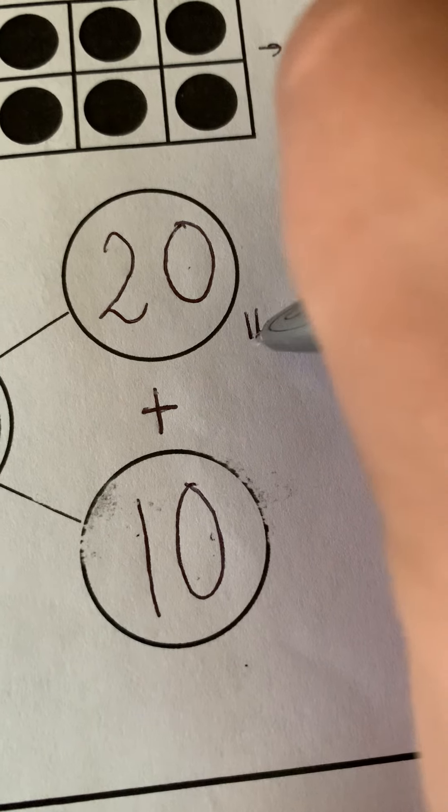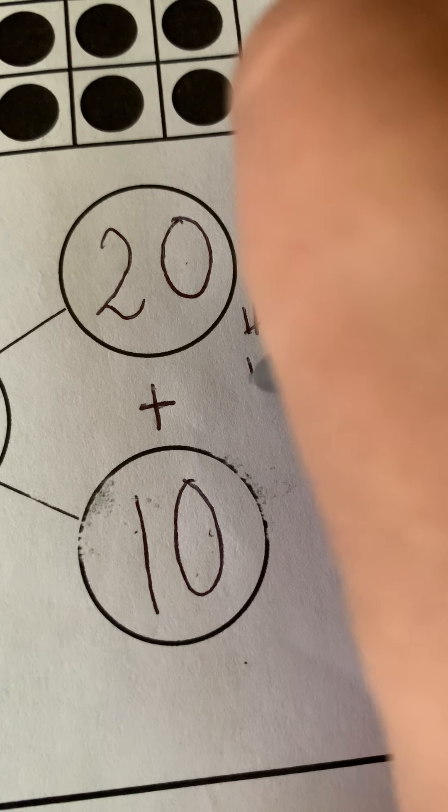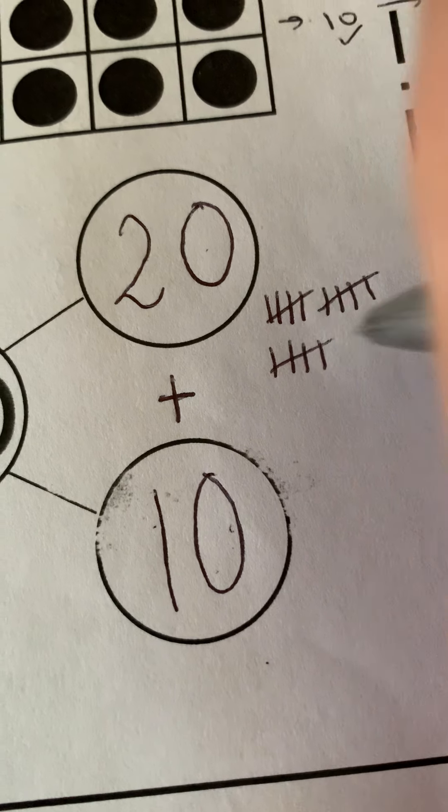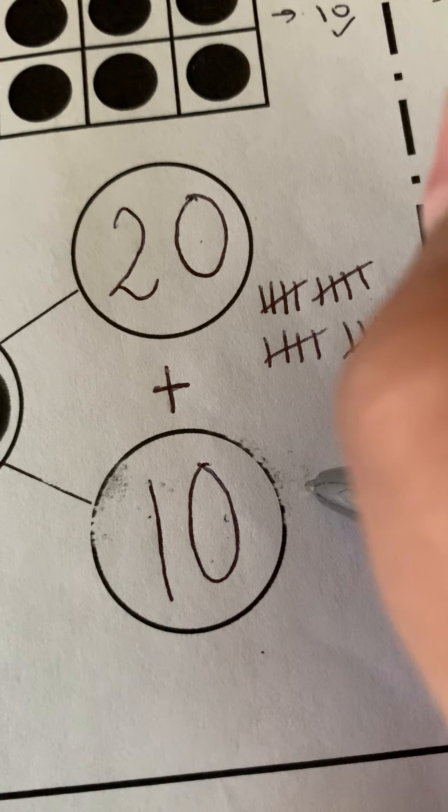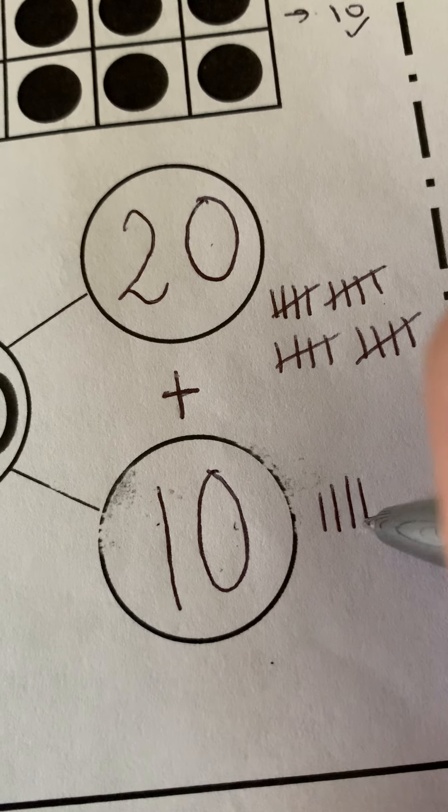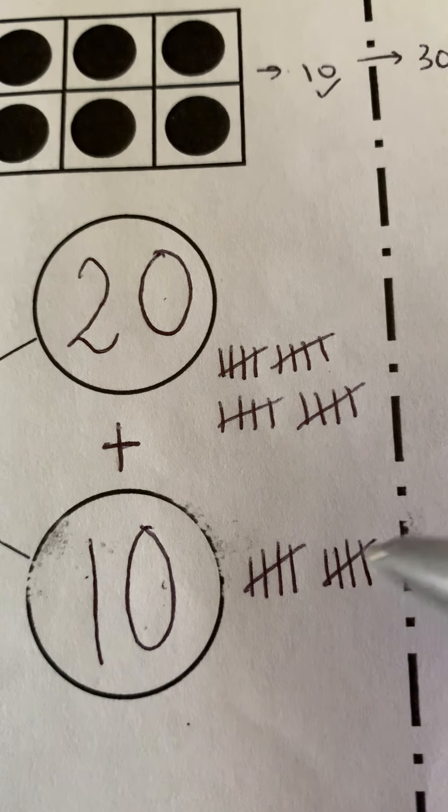Because we know 20. So we'll count it out. 1, 2, 3, 4, 5, 6, 7, 8, 9, 10, 11, 12, 13, 14, 15, 16, 17, 18, 19, 20, 21, 22, 23, 24, 25, 26, 27, 28, 29, 30.